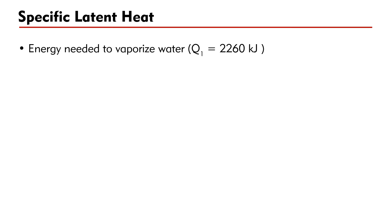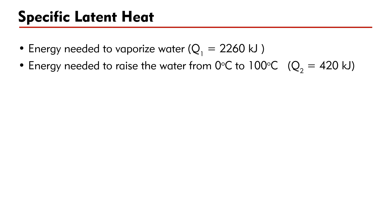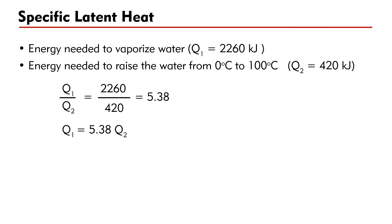Let's compare the energy needed to vaporize water, Q₁, to the energy needed to raise the water from 0 degrees Celsius to 100 degrees Celsius, Q₂. The ratio of Q₁ to Q₂ is 2260 kJ to 420 kJ, or 5.38 — that is, Q₁ equals 5.38 times Q₂.